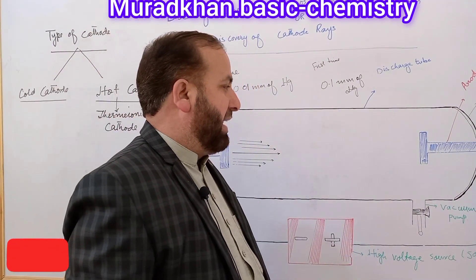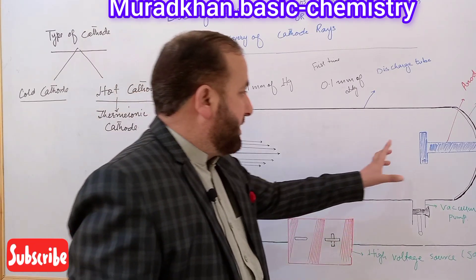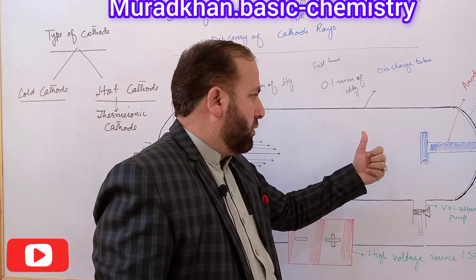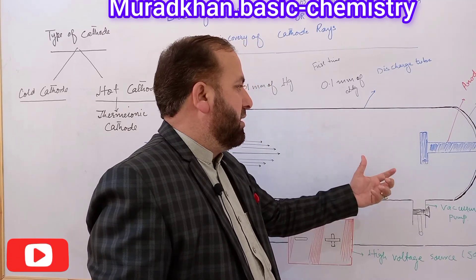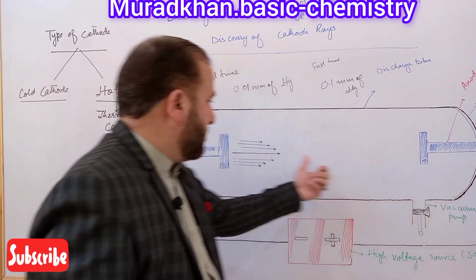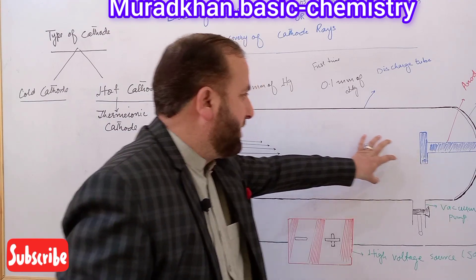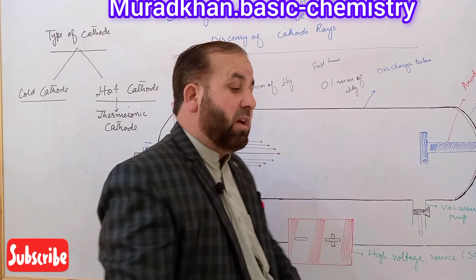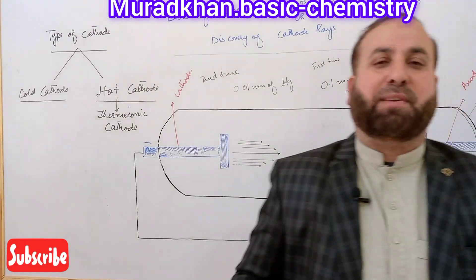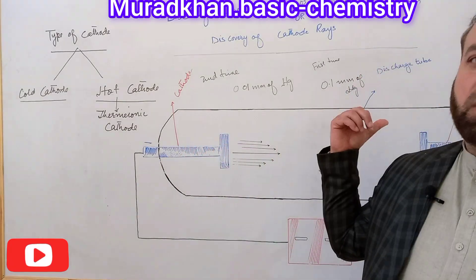Due to a strong high voltage source, there is a strong electrical resistance. Positive ions are produced due to the strong electric field, and they rush towards the cathode. These positive ions move through the cathode and straight towards the anode.